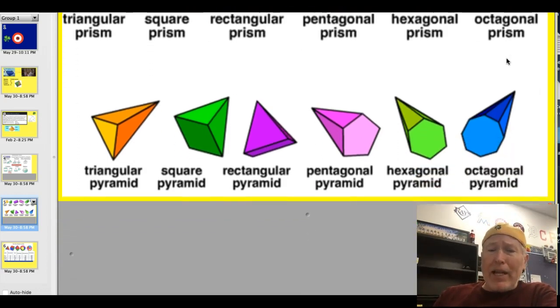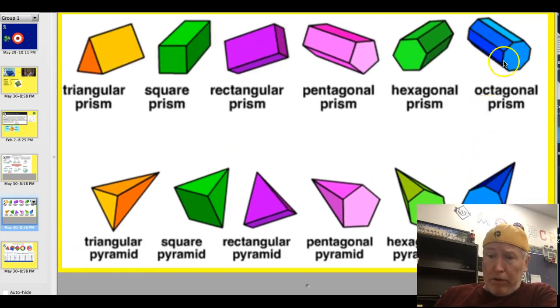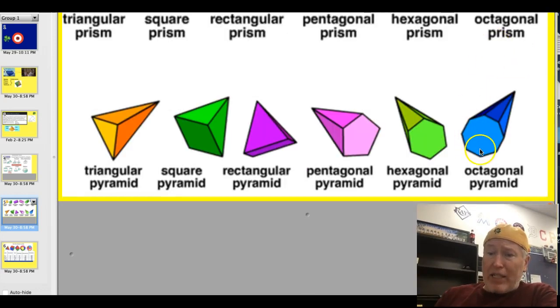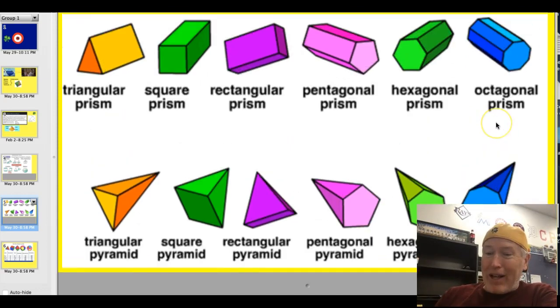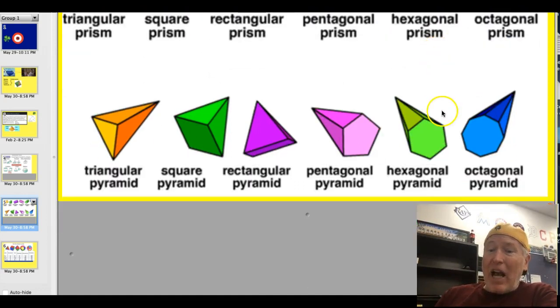Pyramids are like prisms. They are named for their base. But instead of having rectangular sides, they have triangular sides. So here's an octagonal prism. Here's the octagonal prism. Octagonal base, rectangular sides. Here's the octagonal pyramid. Octagonal base, triangular sides. Hexagonal prism, so you notice the rectangular sides. Octagonal pyramid, triangular sides. So they're named for their bases.